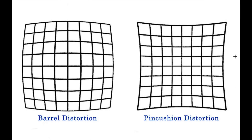Barrel distortion gives your image this kind of barrel look, and it most often happens with wide-angle lenses — generally something wider than 35mm, though it could happen with a 50mm lens. It more often happens with zoom wide-angle lenses, and even more often with cheaper zoom wide-angle lenses. Pincushion distortion, on the other hand, happens with telephoto lenses, and more often with zoom telephoto lenses, and even more with cheaper zoom telephoto lenses.